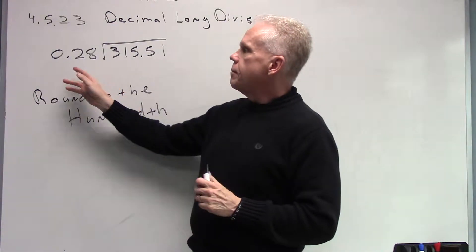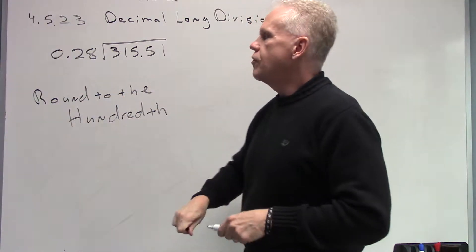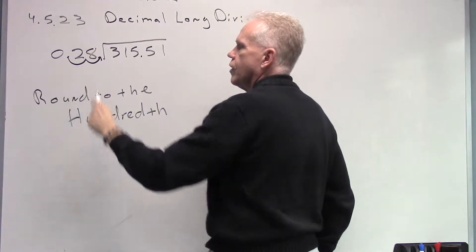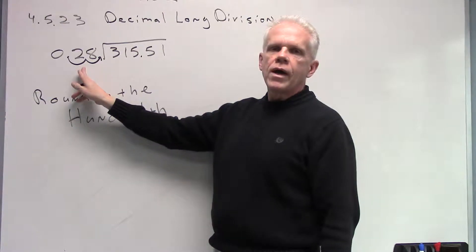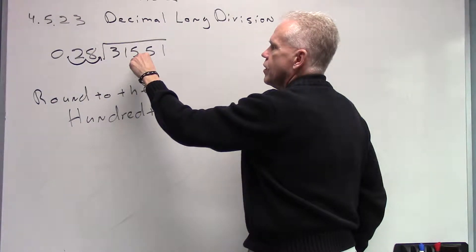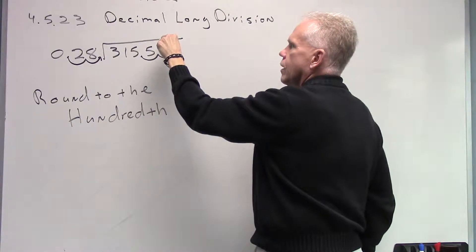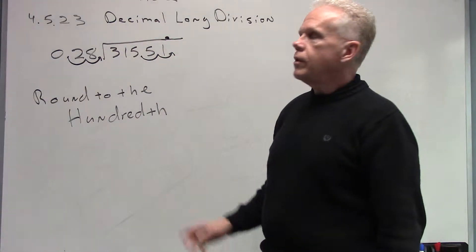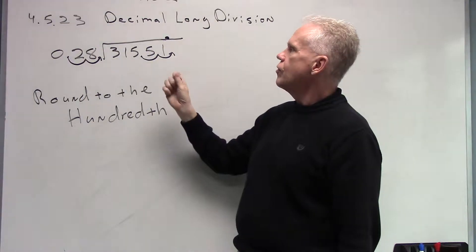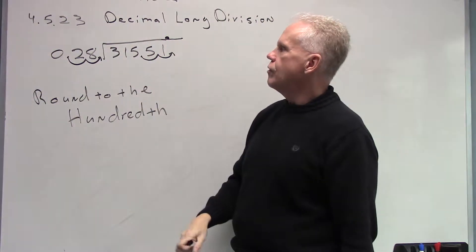We're going to start by clearing the decimal out of the outside number — the divisor. We want to move the decimal in the divisor to the end of the number: one place, two places to the right. We then match that movement by moving the decimal in the dividend two places to the right as well. That tells us where our decimal goes in our quotient — the answer up at the top.